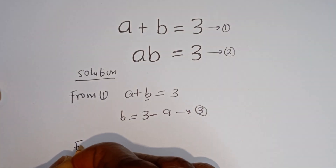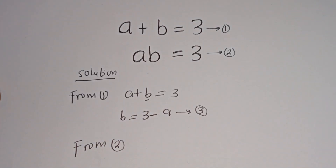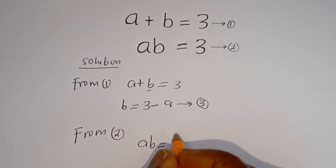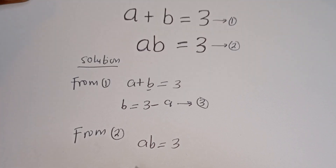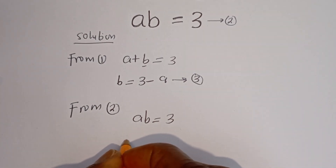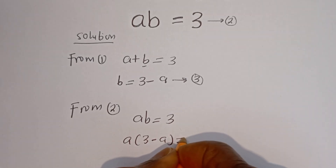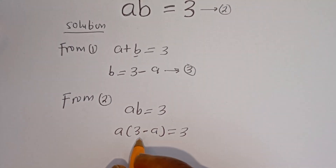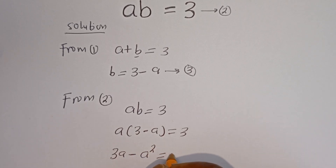Then from equation 2, A times B is equal to 3. We can now substitute for B. Then we have A times (3 minus A) is equal to 3. Let's open this bracket: A multiplied by 3 gives 3A, minus A multiplied by A, which is A squared, is equal to 3.